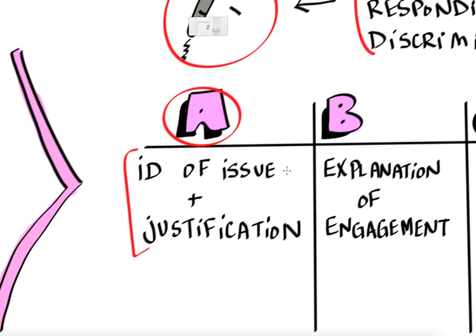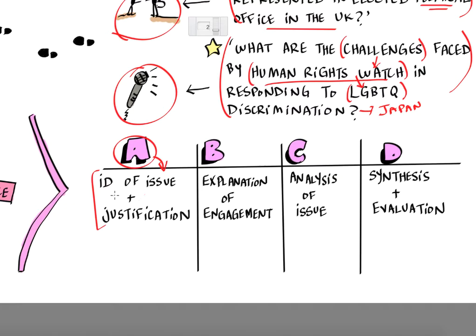Lastly, let's look at the assessment criteria, broken into four parts: A, B, C, and D. Criterion A is identification of the issue and justification — you have to justify why the issue is important. The first part of your report will describe the issue and justify why it's important and why you want to study it. Criterion B is explanation of the engagement: what are you doing, where are you going, who are you talking to, and why is that helping you to explore this issue?